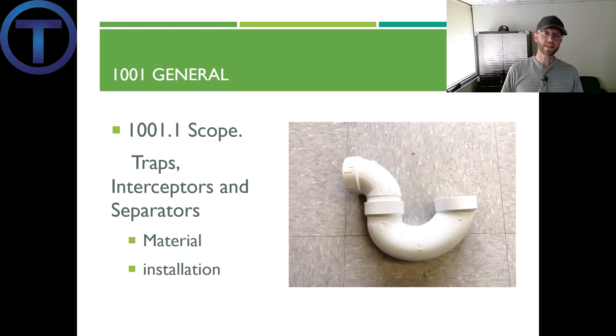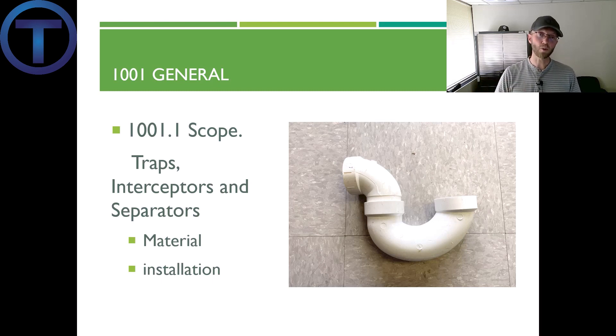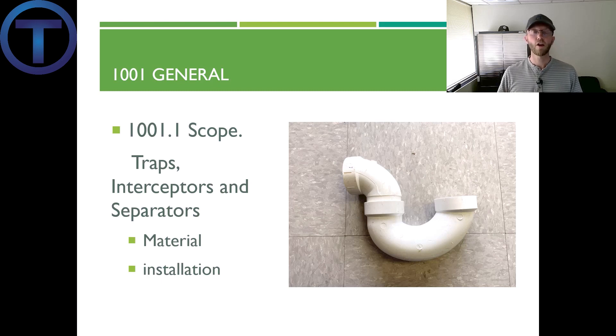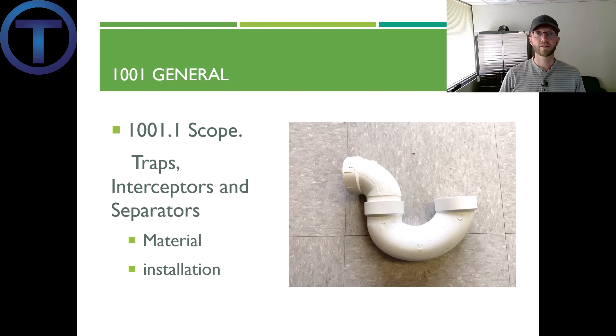Section 1001.1 gives us the scope. This basically tells us that this chapter will govern the materials and the installation for traps, interceptors, and separators.